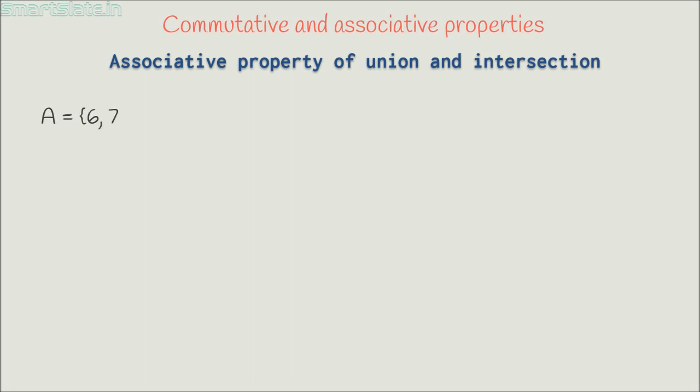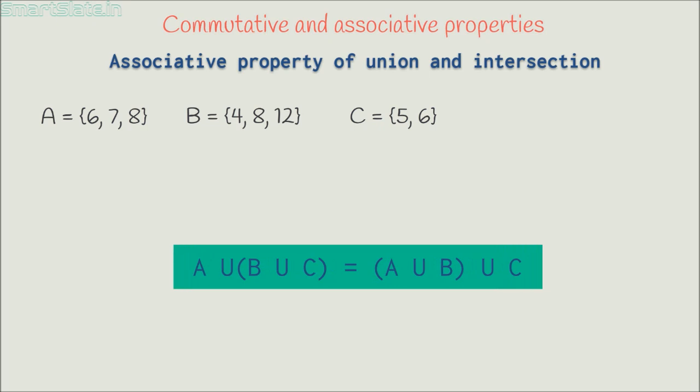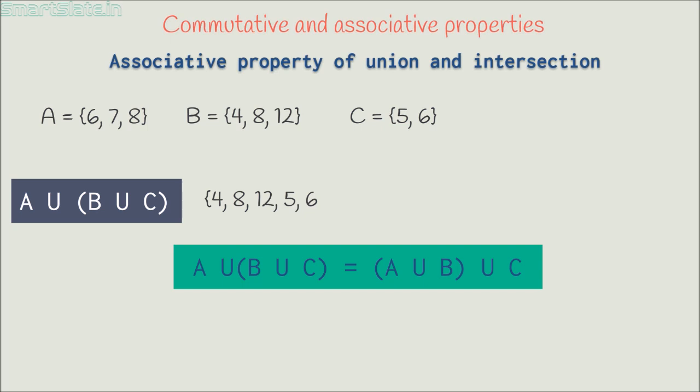Let's find out if associative property holds true with set operations. First, let's see associative property with respect to union of sets. Consider three sets: Set A with elements 6, 7 and 8; Set B with elements 4, 8 and 12; Set C with elements 5 and 6. As per associative property, we are supposed to prove A union (B union C) is equal to (A union B) union C. Find B union C: it is 4, 8, 12, 5 and 6. Find the union of this set with set A — since 6 and 8 are already present, it is 4, 8, 12, 5, 6 and 7.